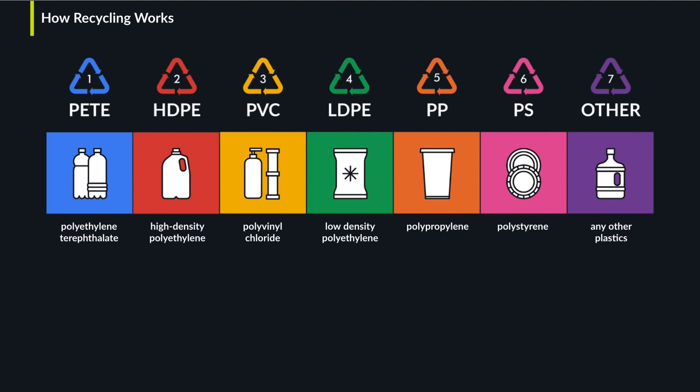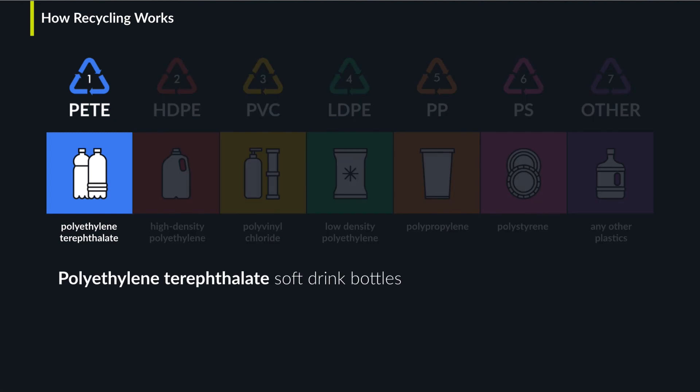Plastic recycling is the process of recovering waste, scrap, or used plastics, and reprocessing the material into useful products. For example, polyethylene terephthalate, used in soft drink bottles, can be melted down and used for plastic furniture, carpet, or other applications.